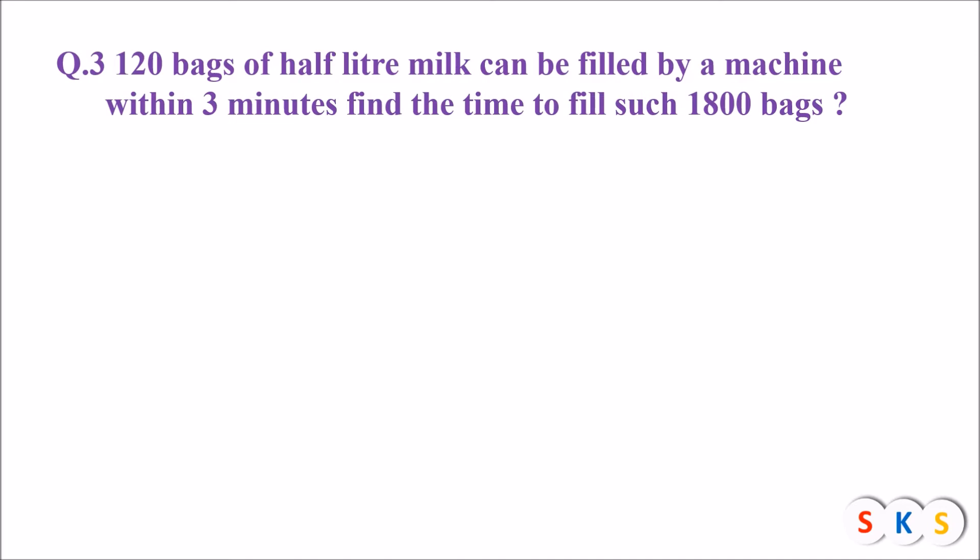If there are 120 bags it takes 3 minutes. Now here we have more than 120 bags, so definitely the machine will take more than 3 minutes. It means if the number of bags increases, time will also increase. Such a change is known as direct variation.